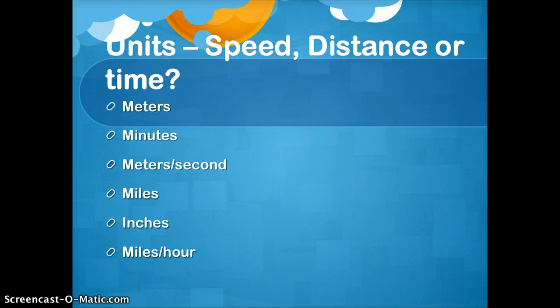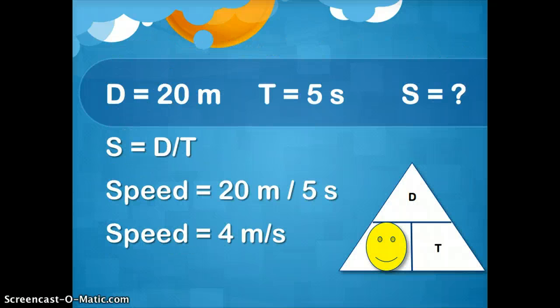All right. That's what I got for you. We'll do a couple practice problems if you'd like to continue this video. So speed equals distance over time. Distance is 20 meters. Time is 5 seconds. What is the speed? 20 divided by 5. You'll get 4 meters per second.